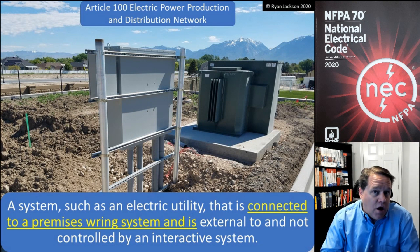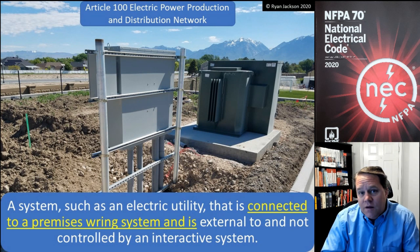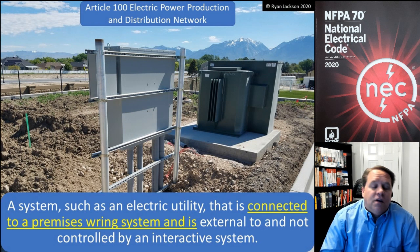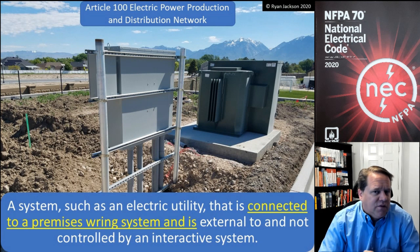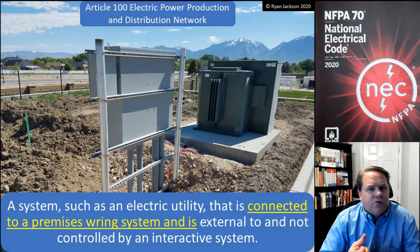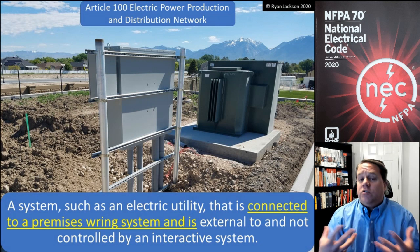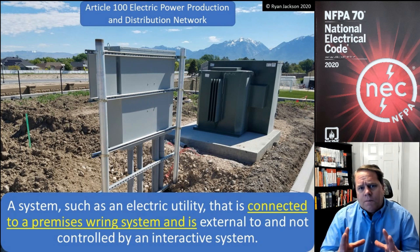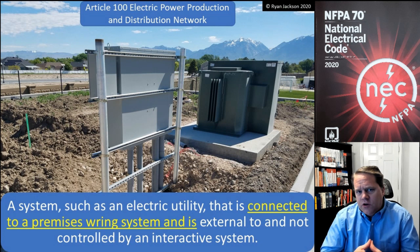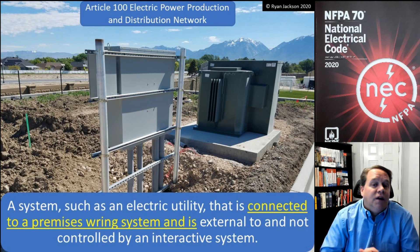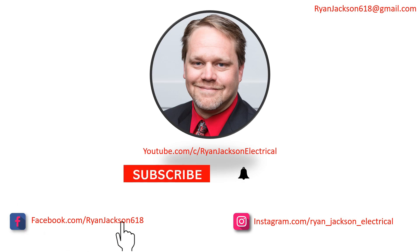I think this is a term you're going to see take off, and it might ultimately take the place of the term utility. When you go to 90.2(B), it says that utilities have exemptions for certain types of installations — service drops, service laterals, associated metering, and installations on utility-owned easements or public rights-of-way. So you're probably eventually going to not see the word utility in 90.2(B) — you might end up seeing the term electric power production and distribution network instead.